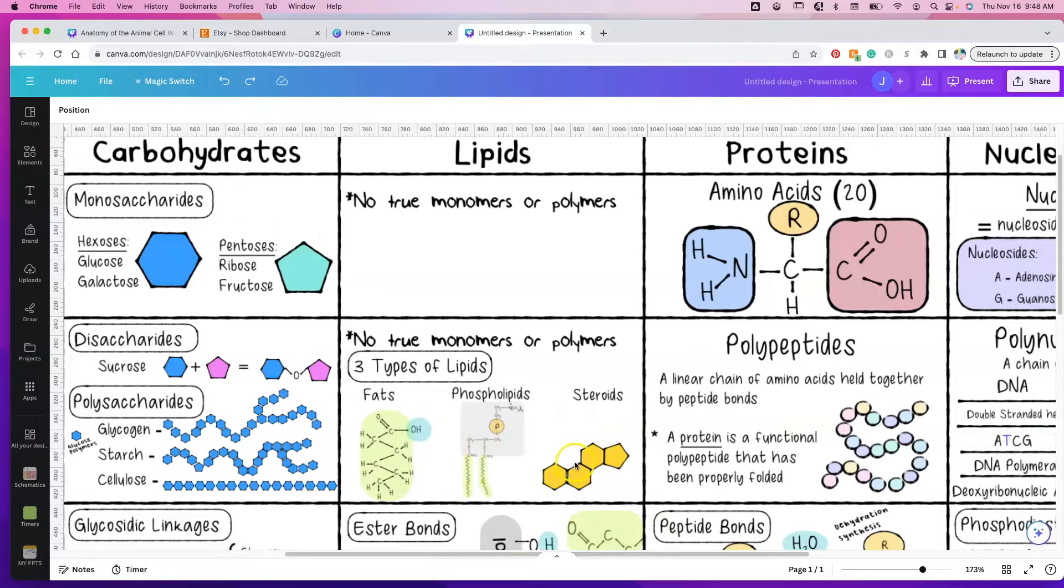Lipids do not have monomers, so they do not have polymers. However, I do have the three types of lipids. We have fats or fatty acid chains, we have phospholipids which make up our plasma membrane and all of the membranes around our membrane-bound organelles, and we have steroids. This is a four-ring structure that's the basis of cortisol, estrogen, progesterone, testosterone, and others.